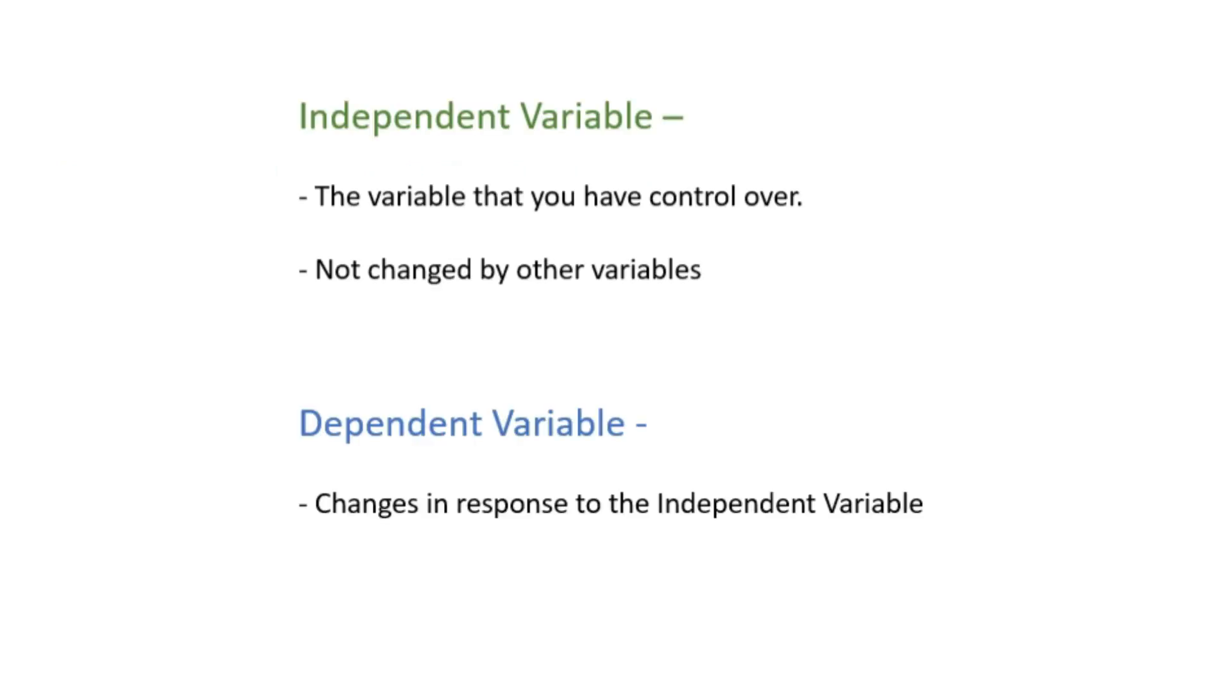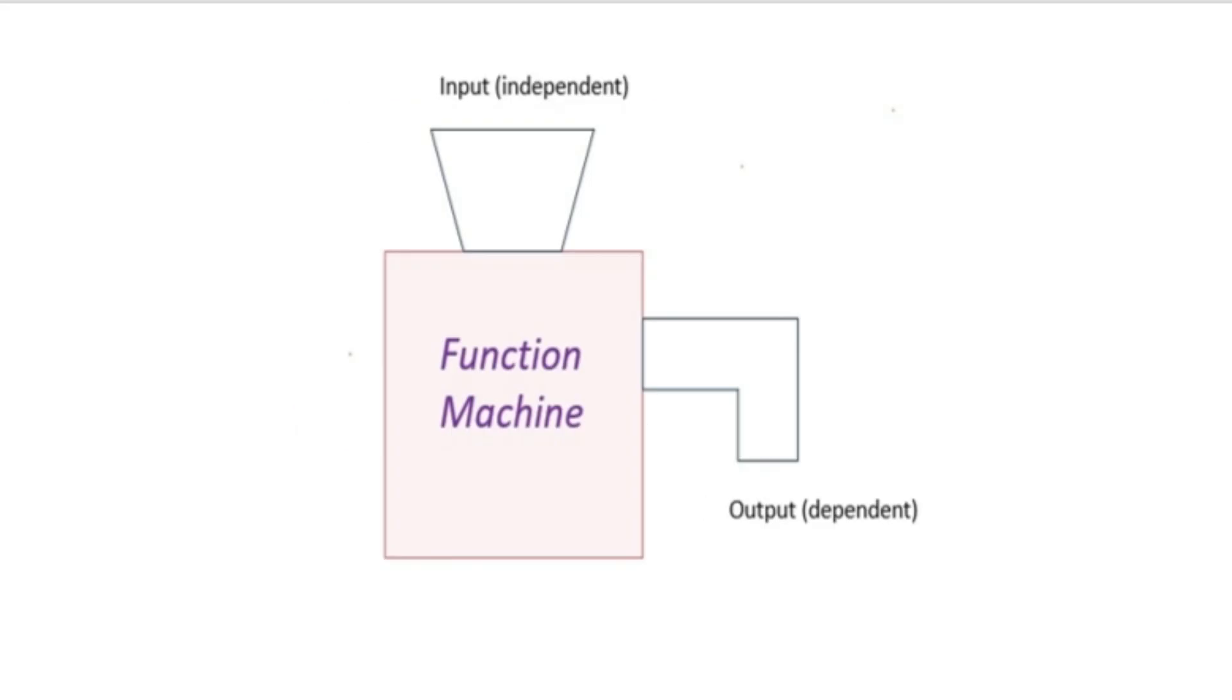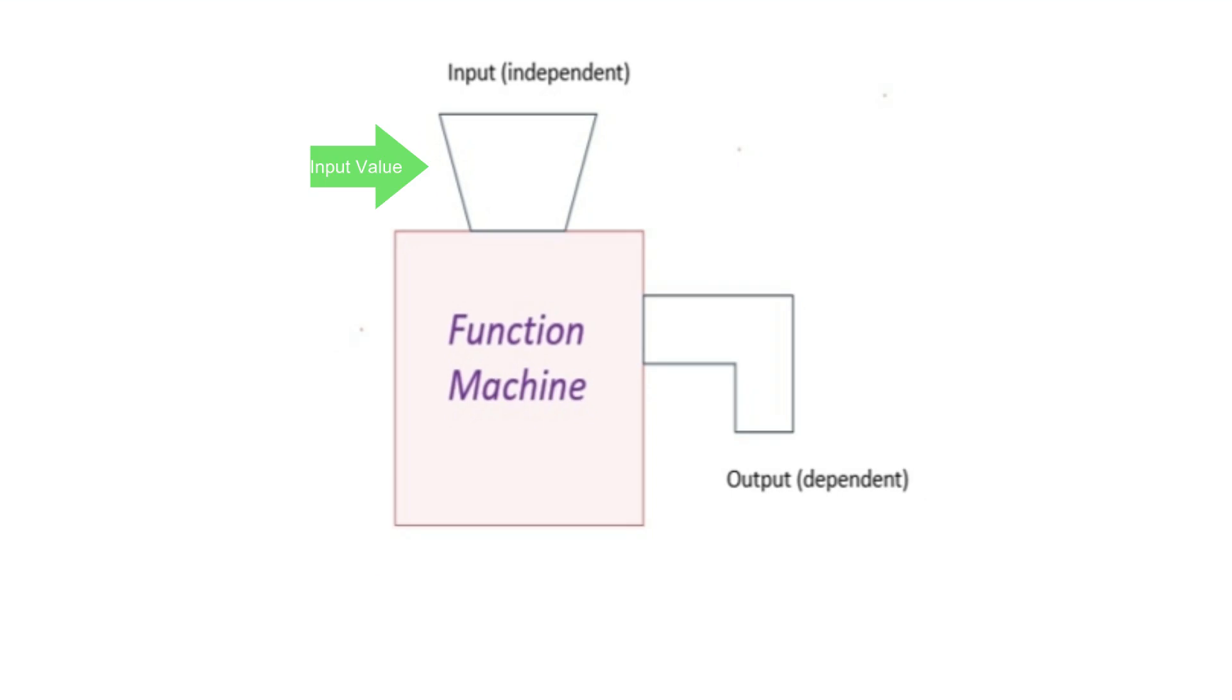We can look at this in a visual manner. Let's say we have a function machine. We can put in inputs, the values that can go into the independent variable. When it goes through a function, a specific output comes out. That is dependent. So those are the dependent variables.